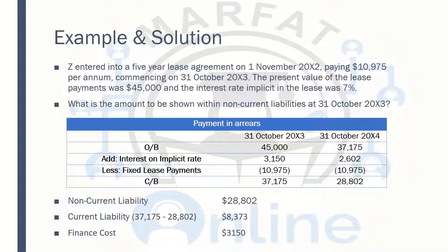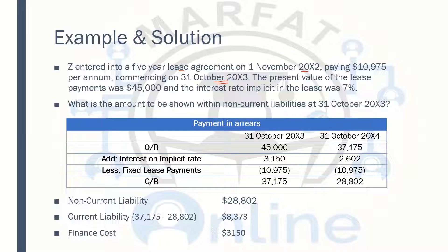Z entered into a 5-year lease agreement on 1st November. The lease agreement started on 1st November and the first payment was made on 31st October — so the payments are being made at the end of the year. This is payment in arrears. The present value of the lease payments, which gives us the opening balance directly, was $45,000. The interest rate implicit in this question is 7%.